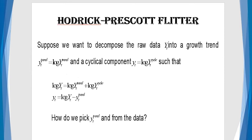And so, what is the component of this or how do we do it? Suppose we want to decompose the raw data y_t into a growth trend that we wrote as y_t^trend equals log of Y_t^trend capital trend, and the cyclical component y_t which is given as this, such that log of Y_t, that is the variable we want to decompose, is equal to log of the trend and log of the cycle.